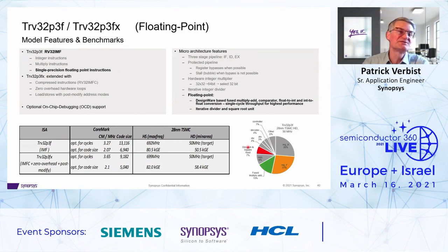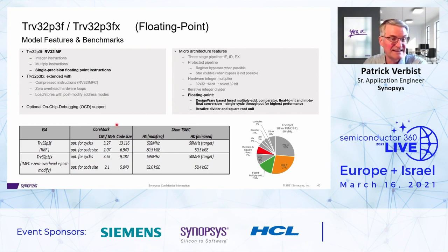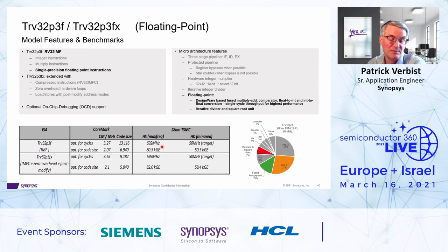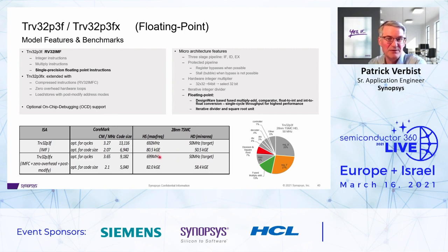Going to the floating-point benchmarks: we added single-precision floating-point instructions based on DesignWare components. The CoreMark numbers are exactly the same, obviously, because CoreMark doesn't include any floating-point routines. But a major difference is the max frequency, which goes from 1.3 GHz in the previous benchmarks to around 700 MHz. That is caused by the floating-point fused multiply-add, which all has to be squeezed into one read-modify-write cycle — a substantial impact on frequency, though still very competitive. Here we are limited by the performance of the DesignWare component.